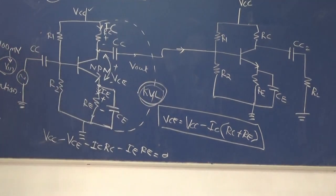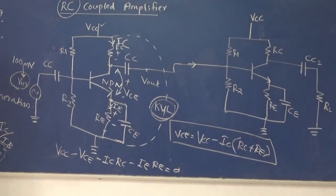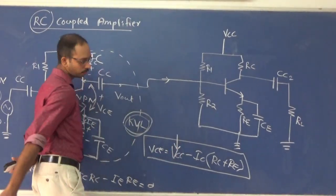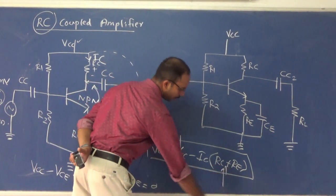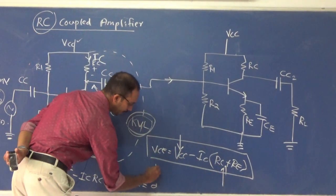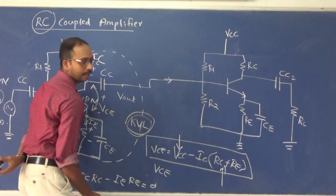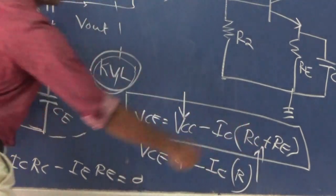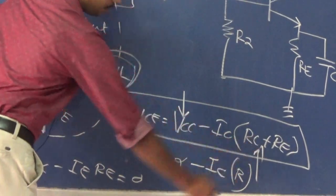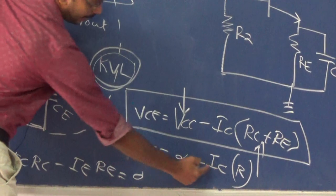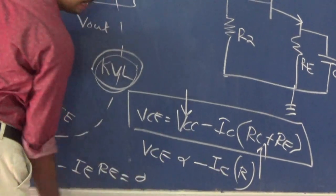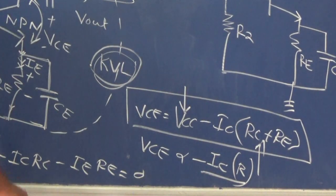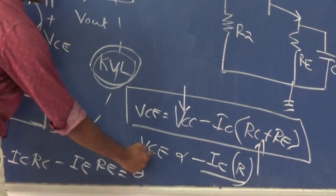From this equation, VCC is constant and the resistance values are also constant. So VCE is directly proportional to minus IC times the resistance value. This means VCE and IC are inversely proportional. The term IC×R gives a voltage value, and VCE is the output voltage.